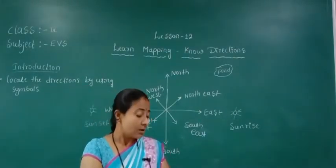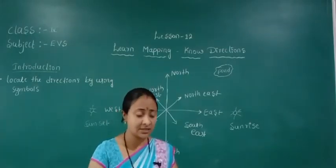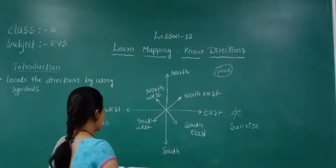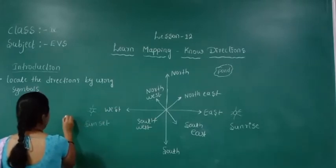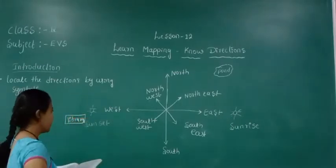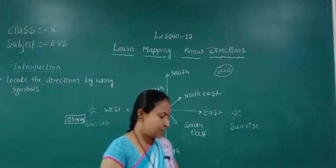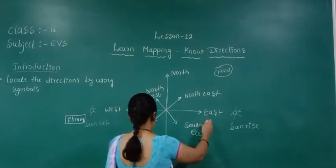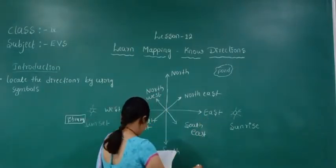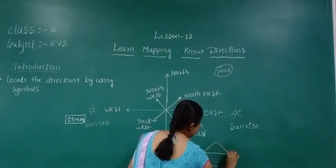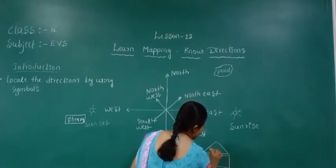Which places are in which directions? Next one — library. Library is in the west side. Next one — school. School is in between south and east, that is south east direction.